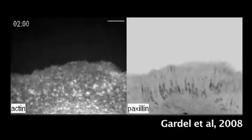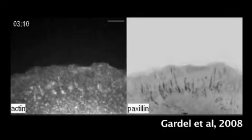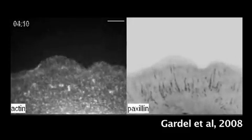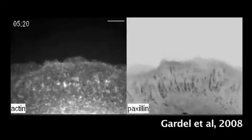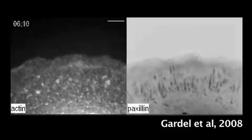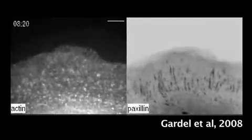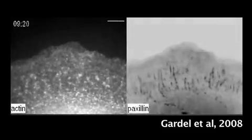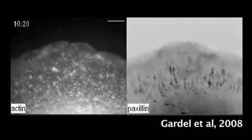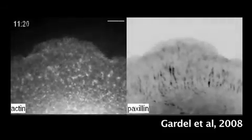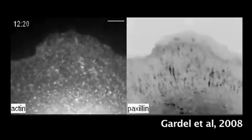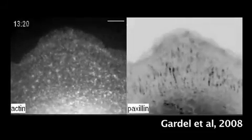The relay of information is accomplished through recruitment and activation of signal transduction molecules to sites where focal adhesions form. Activation of these signaling pathways can lead to both local changes in adhesion structure and global changes in gene expression.